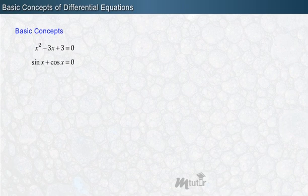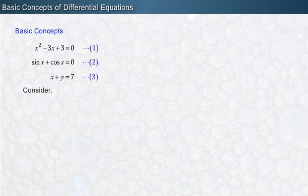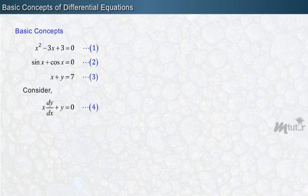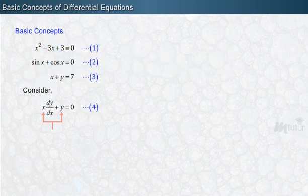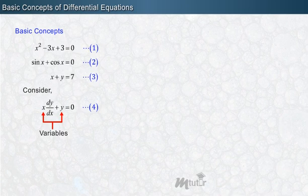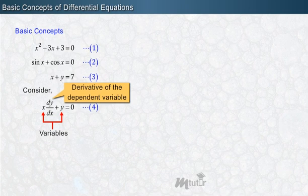We are already familiar with the equations of the types displayed on the screen. Let us name them 1, 2, and 3. Now let us consider the equation x·(dy/dx) + y = 0, and name it as equation 4. We see that equations 1, 2, and 3 involve independent and dependent variables only. But equation 4 involves variables as well as the derivative of the dependent variable y with respect to the independent variable x.